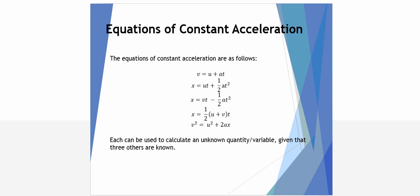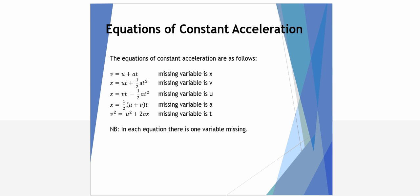To use these equations, you need to have three known variables and one unknown variable. If you look at each of the five equations, you'll see that each is missing a different variable. For example, the first, V equals U plus AT, doesn't have X in the expression. The second, X equals UT plus half AT squared, is missing variable V, and so forth. When you're faced with a problem with three known variables and one unknown variable, there's only ever one equation that's suitable to use.